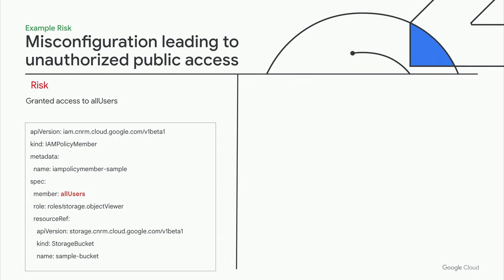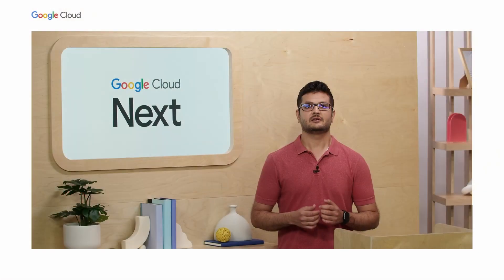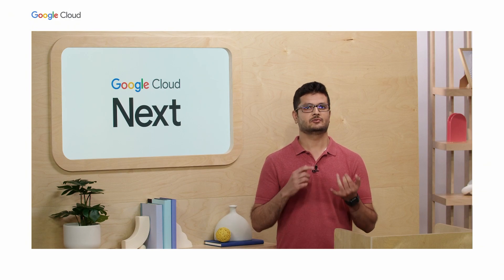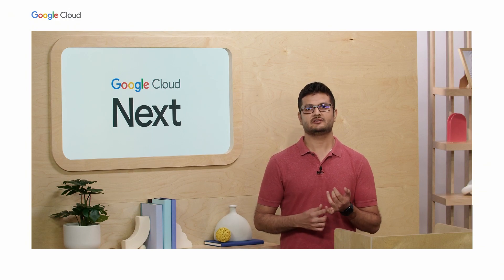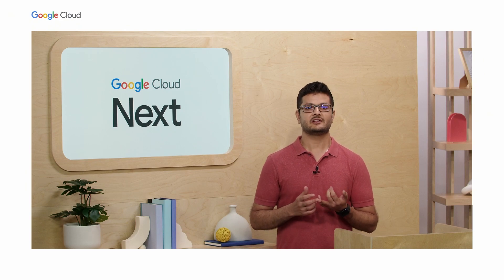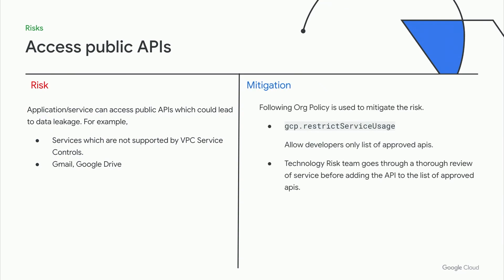We use the public access prevention org policy to prevent developers from creating storage buckets which are accessible by the public. Next is access to public APIs like Gmail or Google Drive, or APIs not supported by VPC service controls, which could lead to data leakage. To mitigate this, we restrict service usage by only allowing approved APIs that are thoroughly reviewed by our technology risk team.